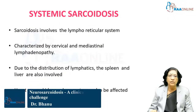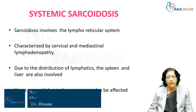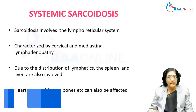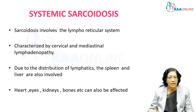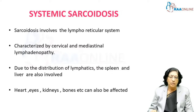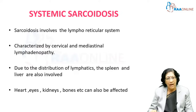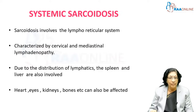Coming to systemic sarcoidosis, the main involvement is the lymphoreticular system, usually characterized by cervical and mediastinal lymphadenopathy. The spleen and liver are also involved because they are part of the lymphatic distribution. Sarcoidosis can also affect the heart, eyes, kidney, bones, and other organs.